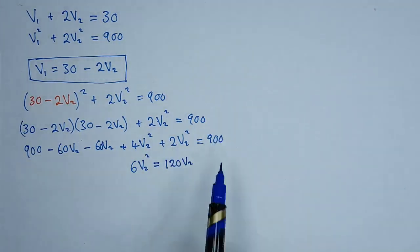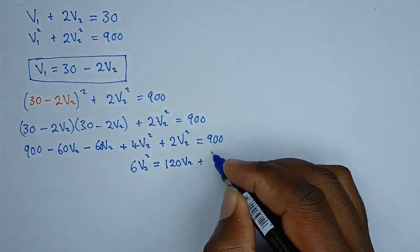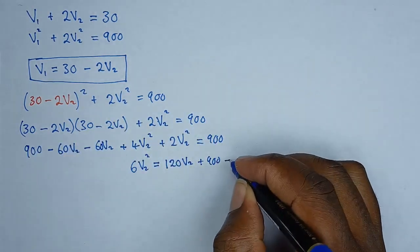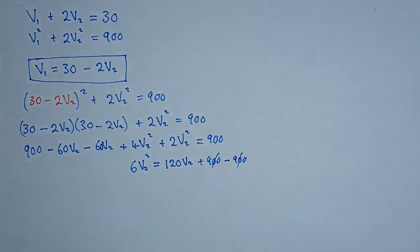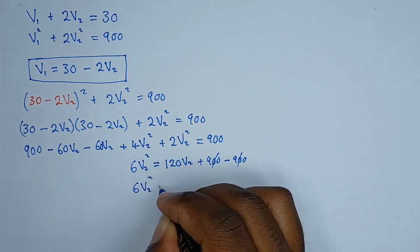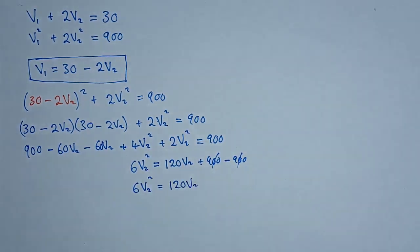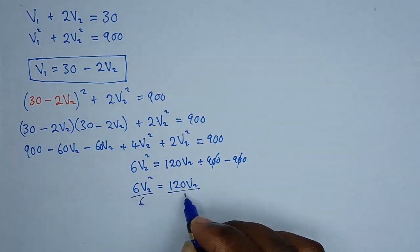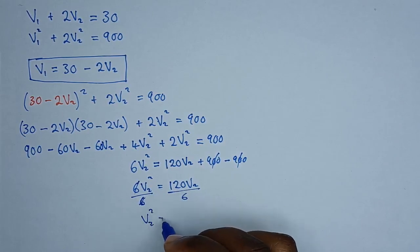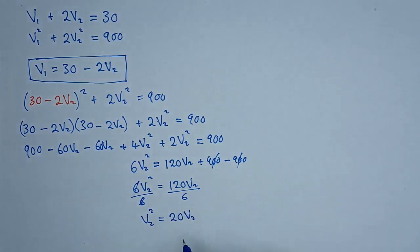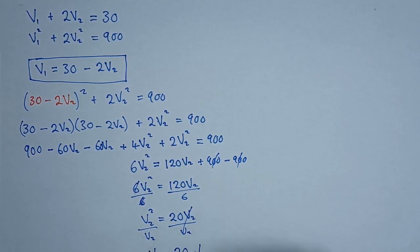The 900 on the left cancels with the 900 on the right, leaving 6v2 squared equals 120v2. Dividing both sides by 6 gives v2 squared equals 20v2. Dividing both sides by v2 gives v2 equals 20 meters per second. So the second object was moving at a speed of 20 meters per second after the collision.